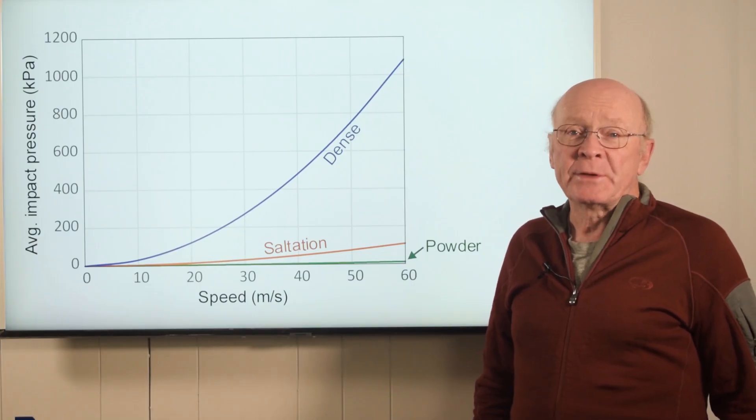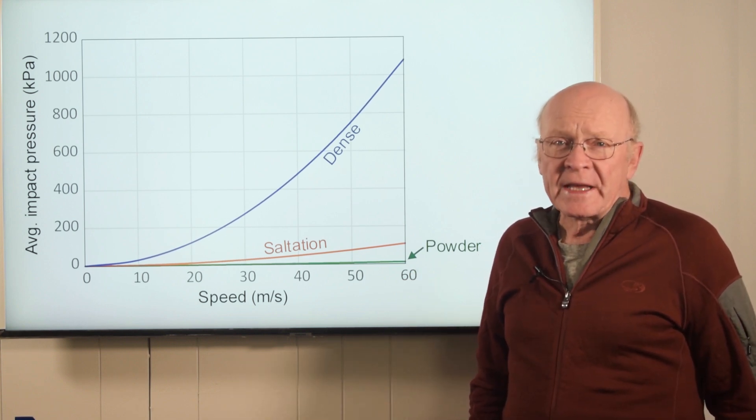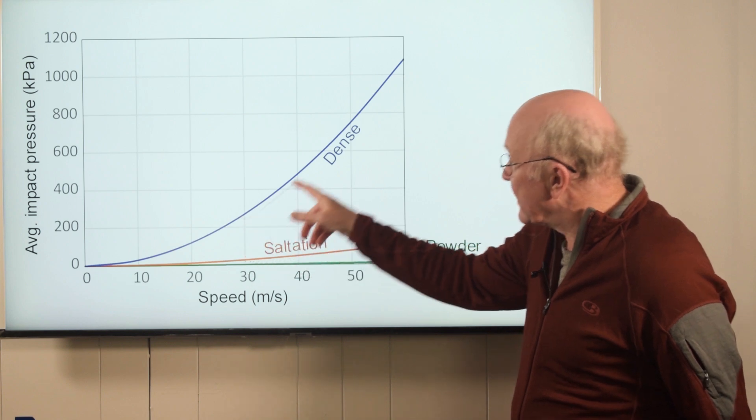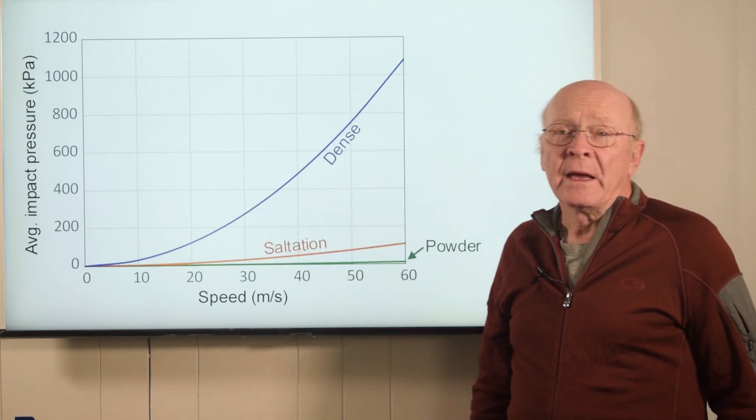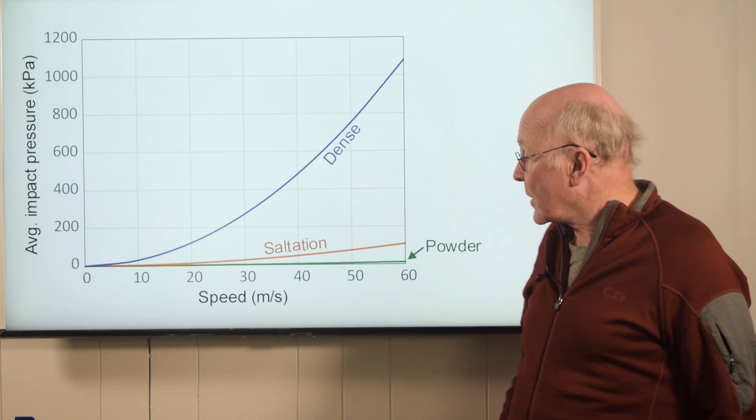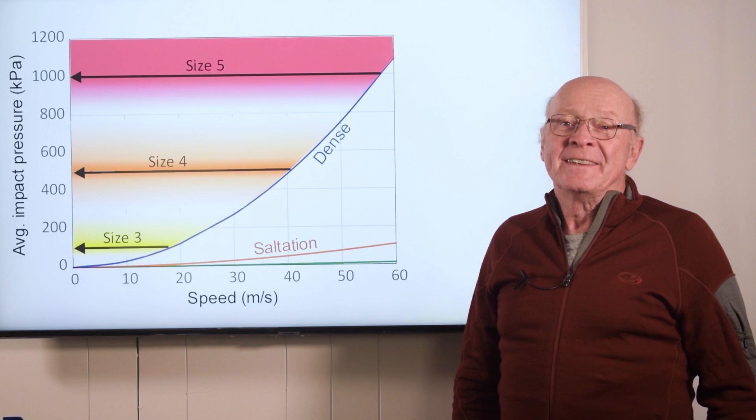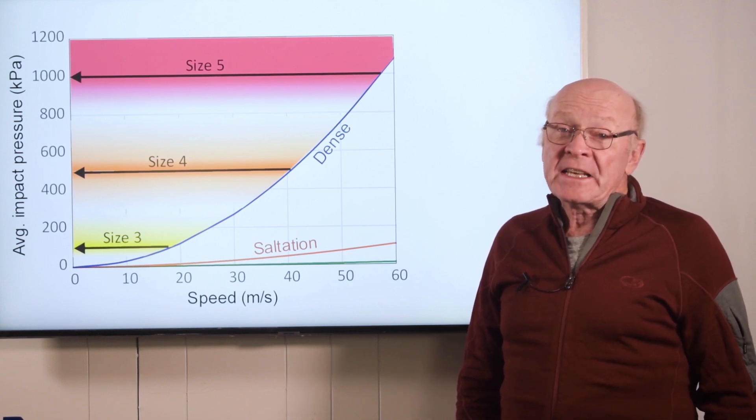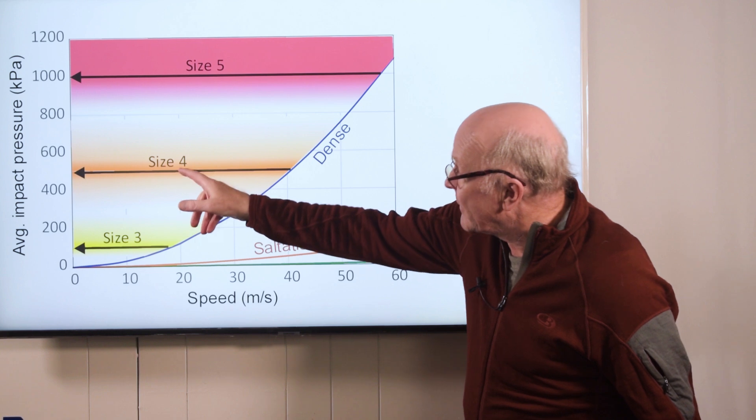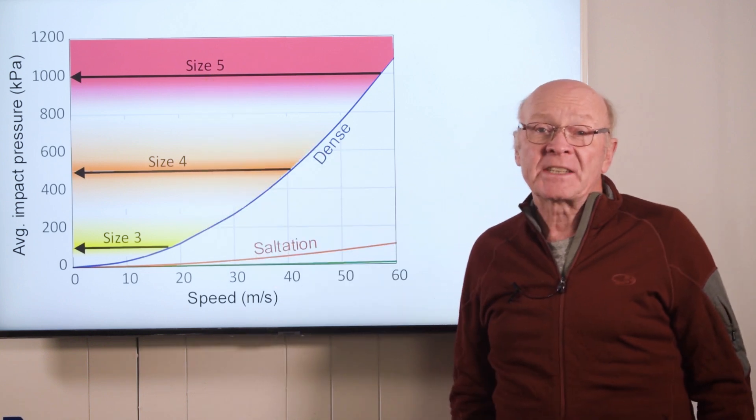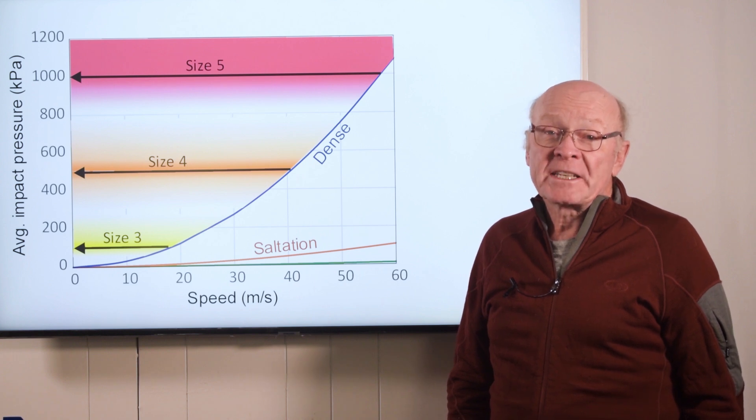For speeds up to 60 meters per second, this graph shows the average impact pressure for the dense flowing layer and the middle saltation layer. The impact pressure for the powder cloud is in green and hiding at the bottom of the graph. The Canadian size scale gives these typical values of impact pressure for size 3, 4 and 5 avalanches. These impact pressures are most likely to be caused by the dry dense flow.